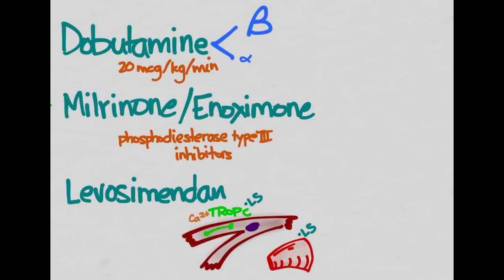Another drug that they mention, but you're probably not going to use, I've never heard of until this article, is levocimendin. What this does is it binds to the troponin C within the cardiac myocytes, which makes it more sensitive to calcium. So now the heart is going to beat more strongly because of that. It does have an added effect of causing vasodilation.